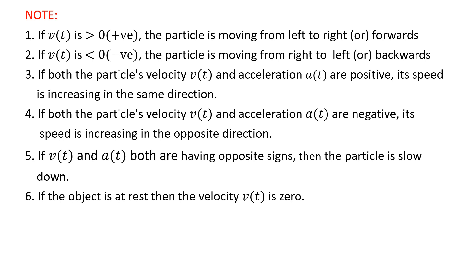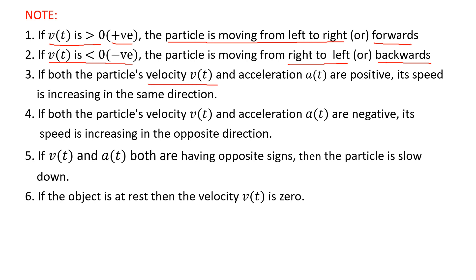Before going to the problems, make these notes clearly in your mind. In any problem, if the velocity value is greater than 0 (positive), then we say that the particle is moving from left to right, or we can say the particle is moving forward. If the velocity function is a negative value, then we say that the particle is moving from right to left, or the particle is moving backward. If both velocity and acceleration — v(t) and a(t) — are both positive, then we say that the speed of the object will be increasing in the same direction.